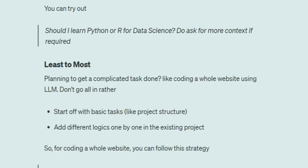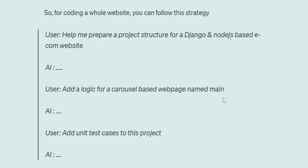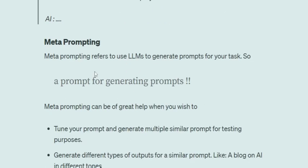The next one is 'least to most.' When you're planning to have a very complicated task done by an LLM — more towards auto-GPT use cases like coding a whole website — the LLM might get confused or start hallucinating. In that case, start with the basic stuff first and then bring on the complications one by one, rather than giving it all at once. For example: 'Help me structure a project for a Django/Node.js-based ecommerce website.' It gives you a response. Then: 'Add logic for a carousel with a webpage named main.' Then: 'Add unit test cases to this project.' You're breaking down the whole task, making it easier for the LLM.